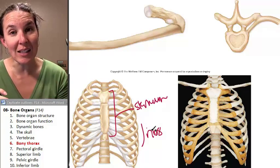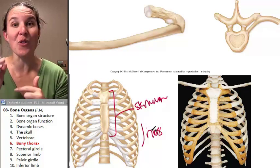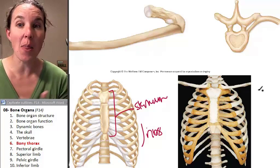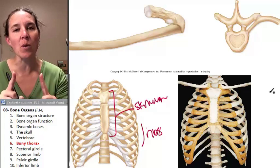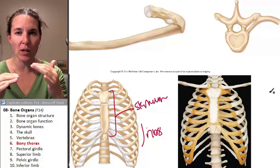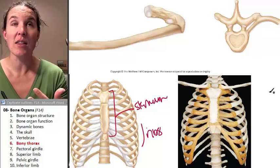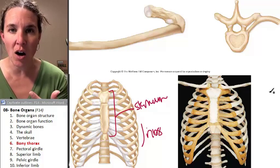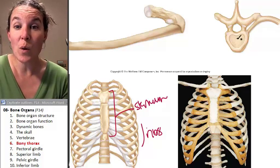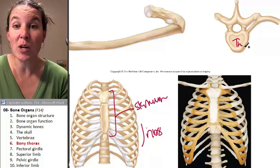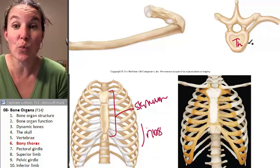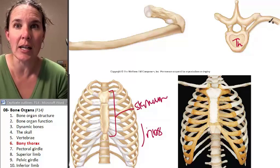Your ribs articulate with your thoracic vertebra in the back, on the posterior side. Here's a picture to visualize the unique features on the thoracic vertebra. We know this is a thoracic vertebra because there is a rib attached to it — a rib articulating with this vertebra.